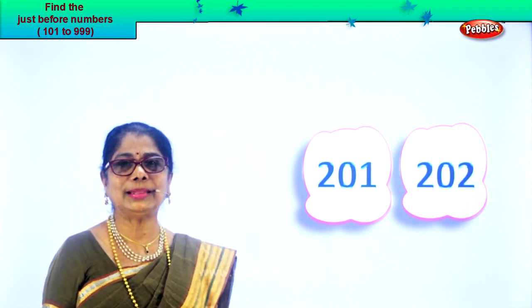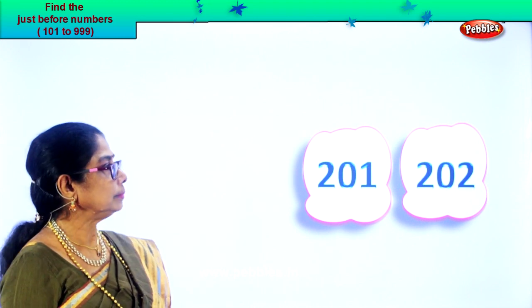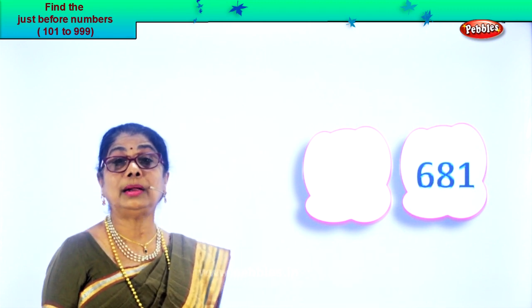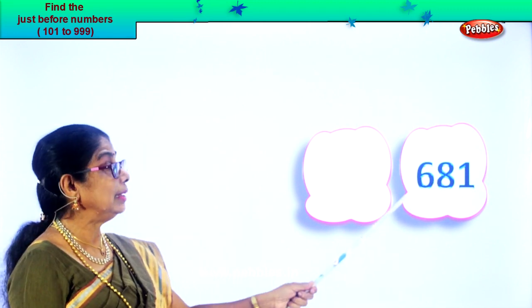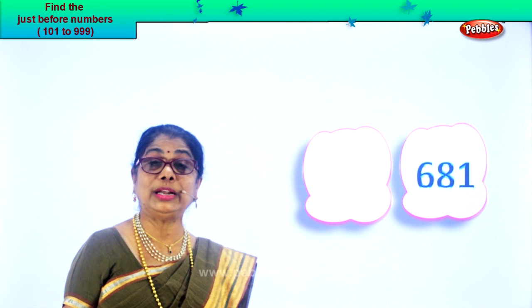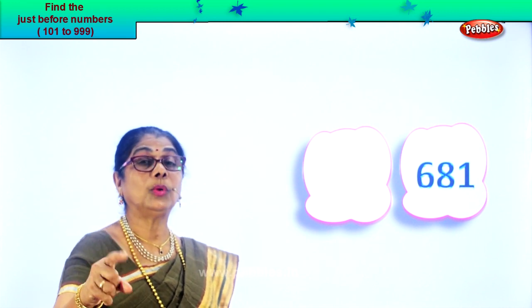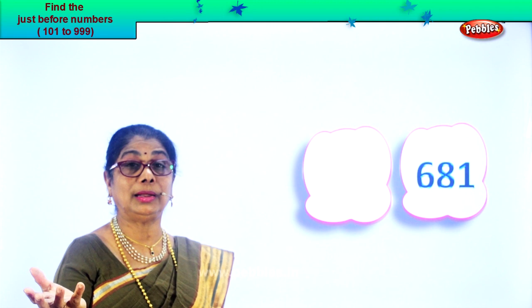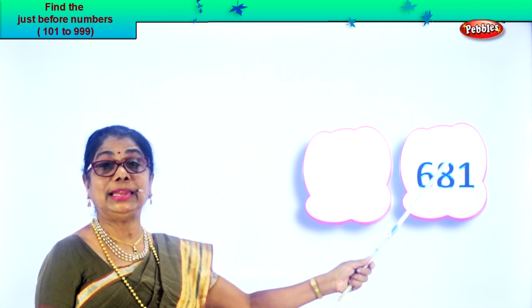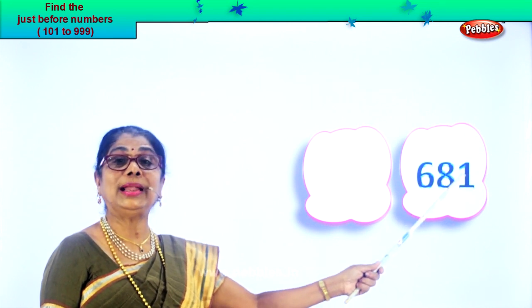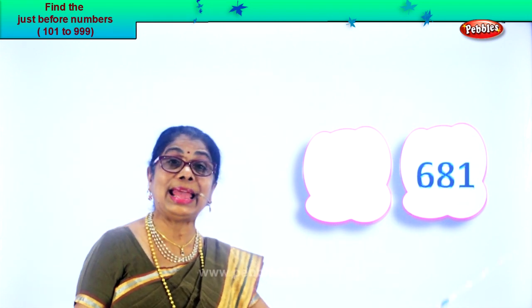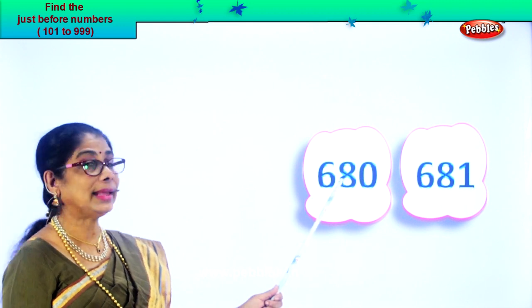Let's get on with another number. We have six in the hundreds place, eight in the tens, and one in the ones place. Read: six hundred and eighty-one. Let's take the ones place — that is one. What is one less? You take the two numbers together: in the tens you have eight, so you have eighty-one. Eighty-one, one less is eighty. So what could be the number before? Six hundred and eighty. Six hundred and eighty.